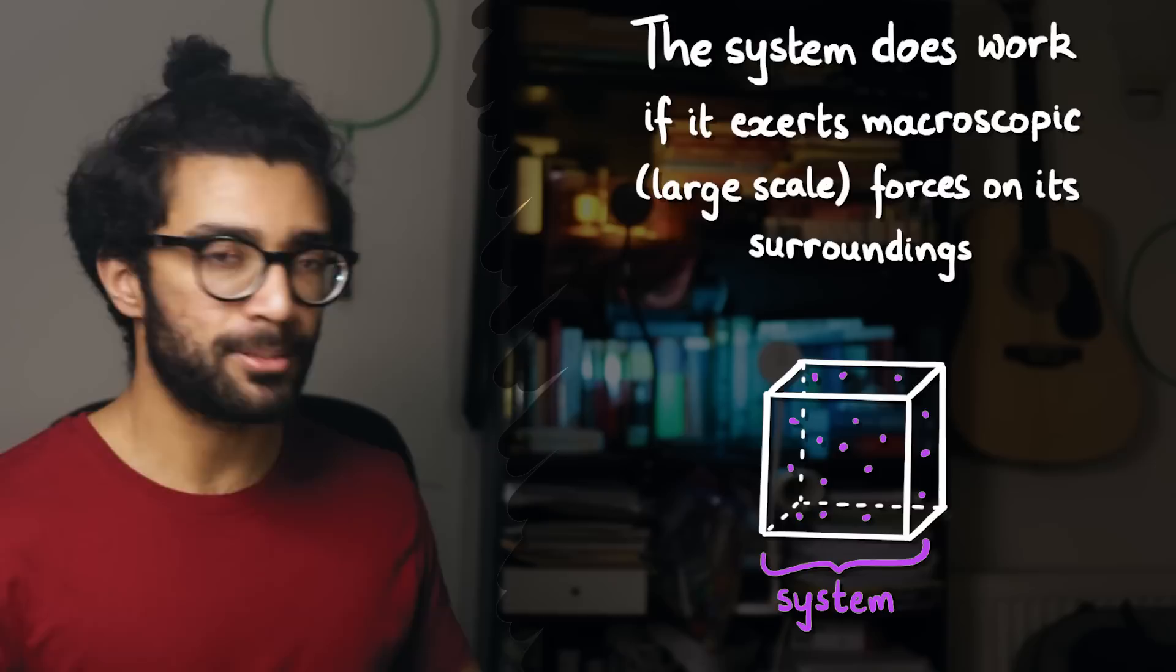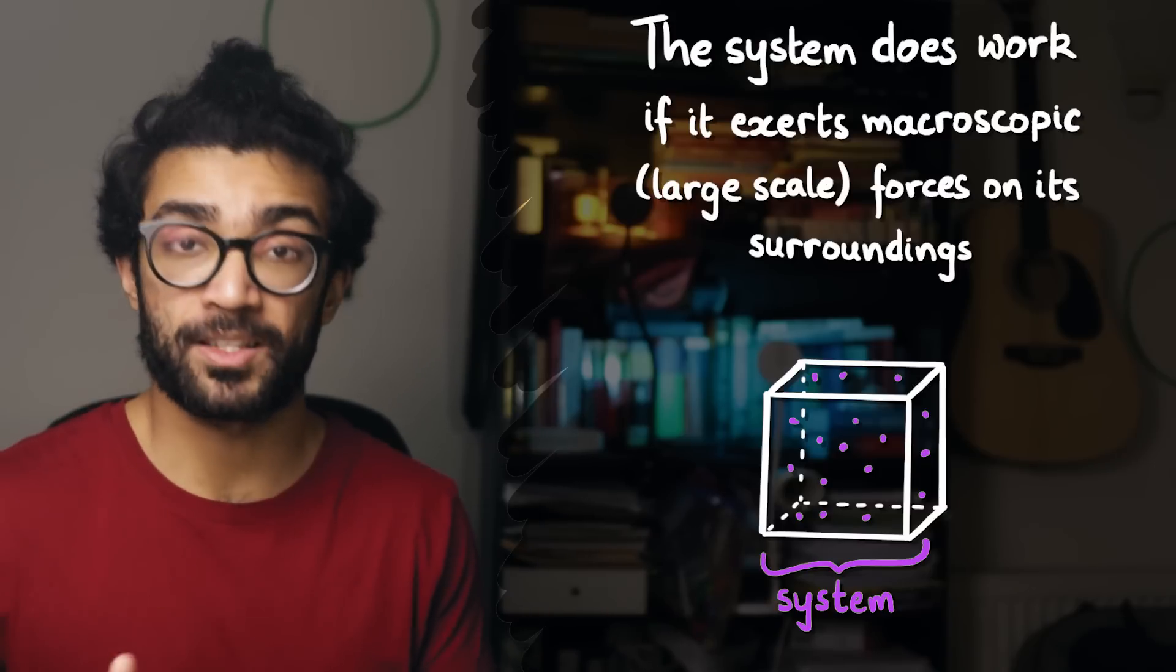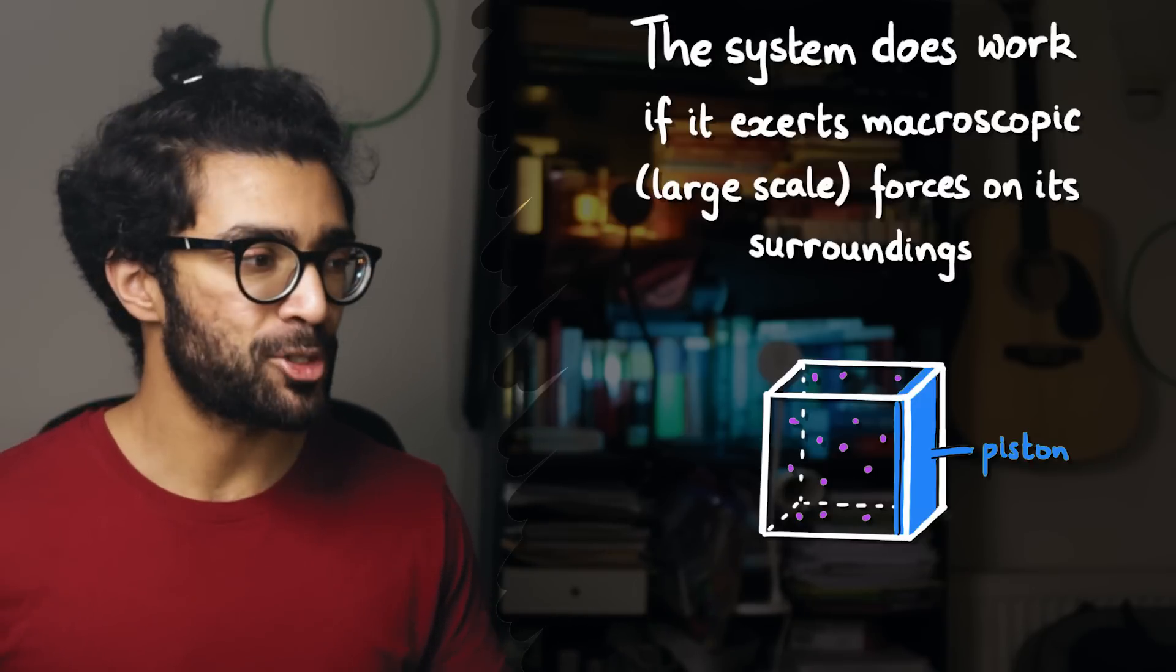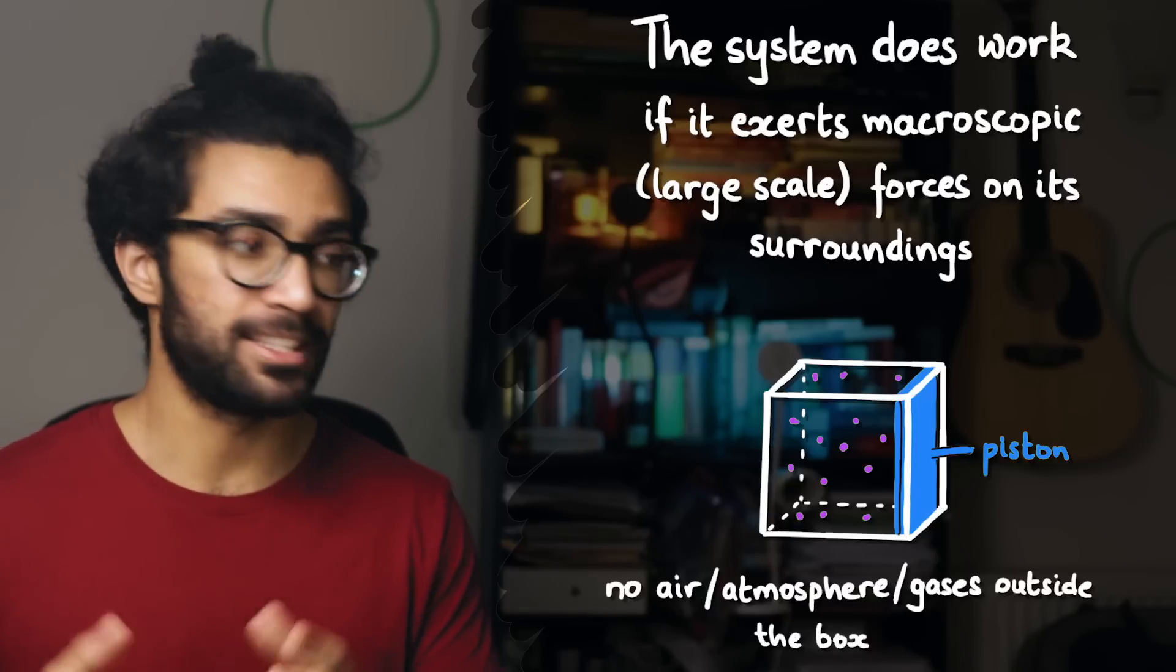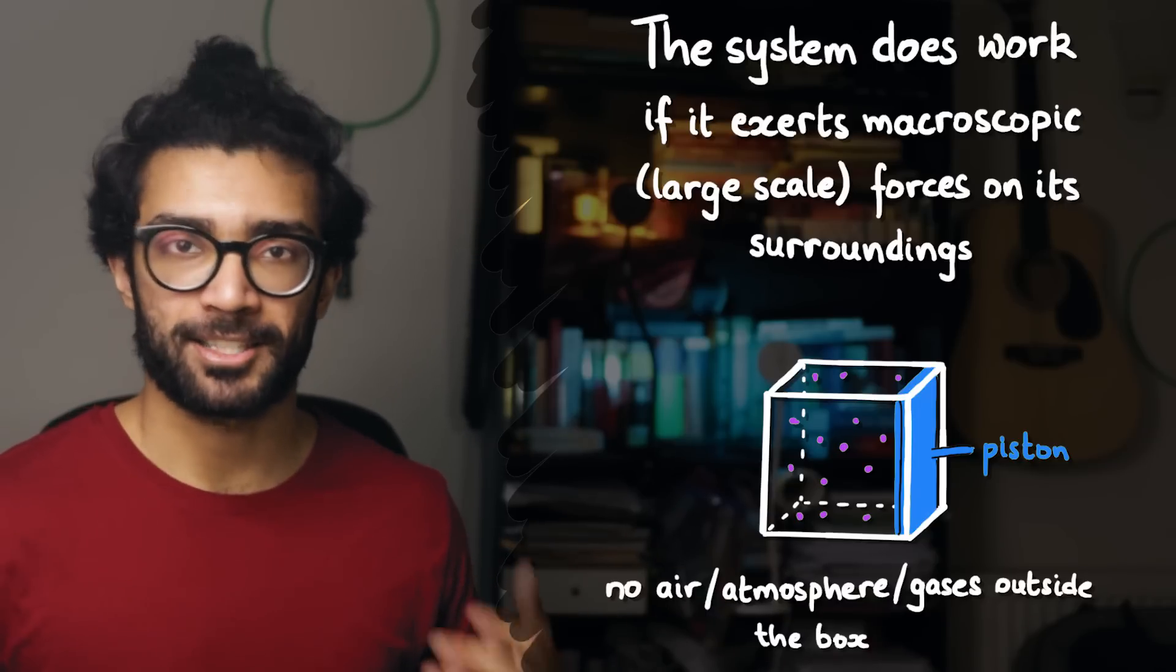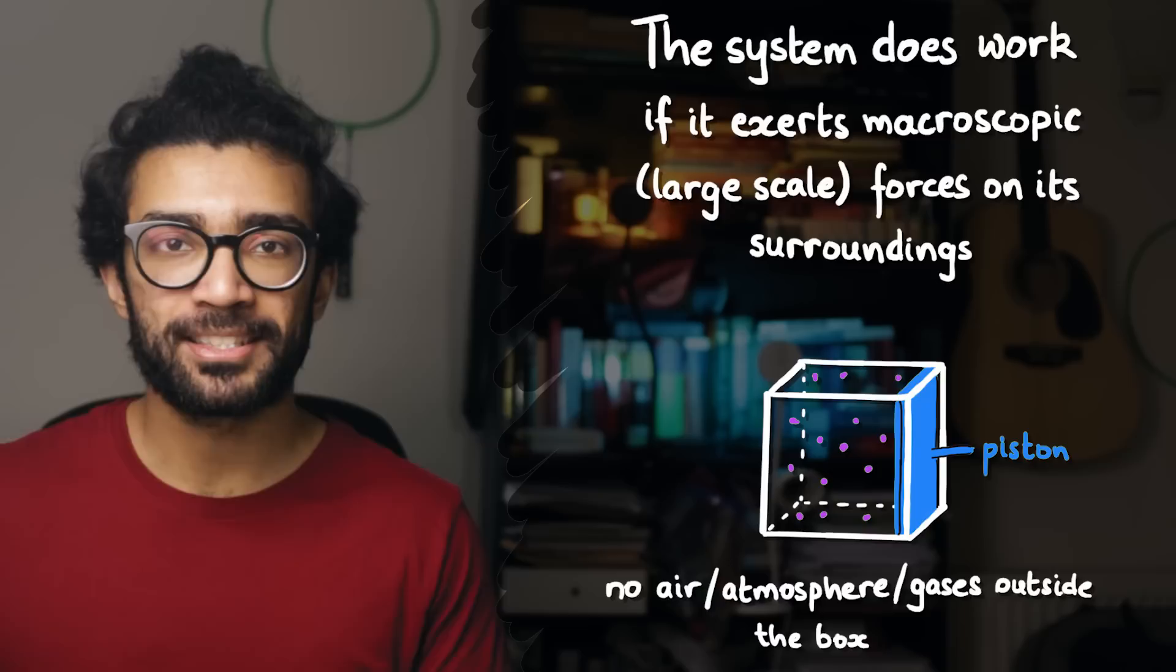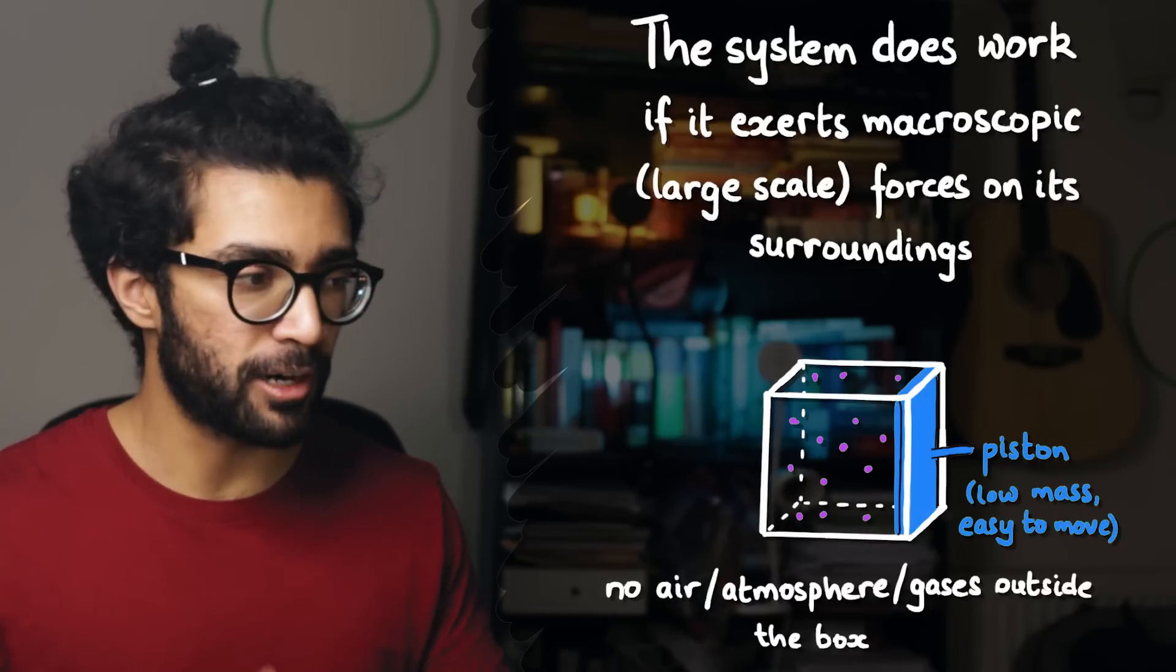Imagine, for example, instead of a solid box we've got one wall that is a piston. For simplicity let's assume that there's no air or atmosphere outside the box. The only gas that exists in this particular scenario is the gas inside our box. And also for simplicity, let's assume that our piston has a very low mass.